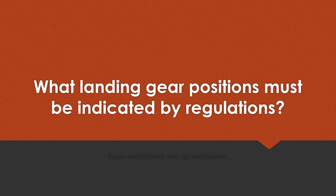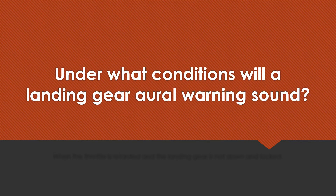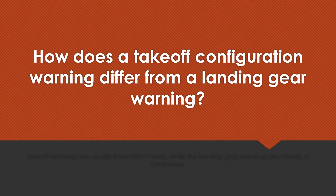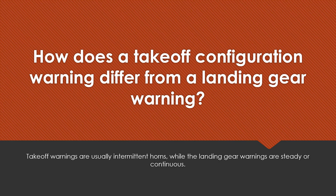What landing gear positions must be indicated by regulations? Down and locked and up and locked. Under what conditions will a landing gear aural warning sound? When the throttle is retarded and the landing gear is not down and locked. How does a takeoff configuration warning differ from a landing gear warning? Takeoff warnings are usually intermittent horns while the landing gear warning is steady or continuous.